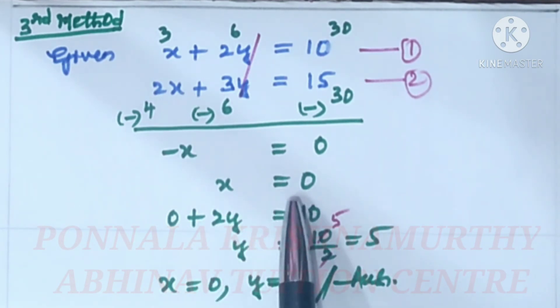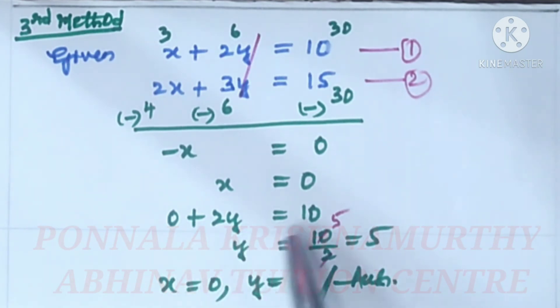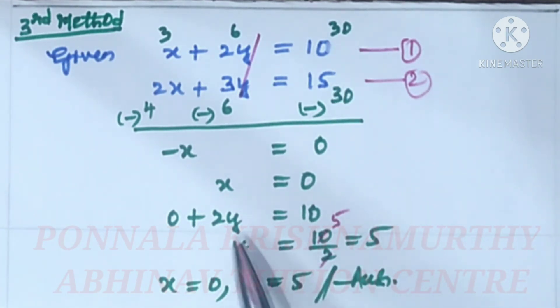Substitute x value in equation 1. 0 plus 2y equal to 10. y is equal to 10 by 2. 2 times 5 is y equal to 5. x is equal to 0 and y is equal to 5. Answers.